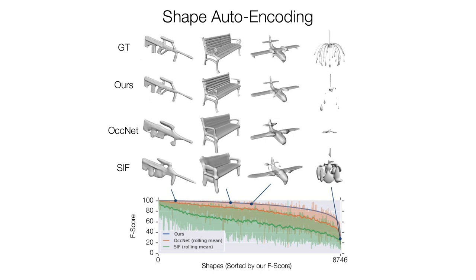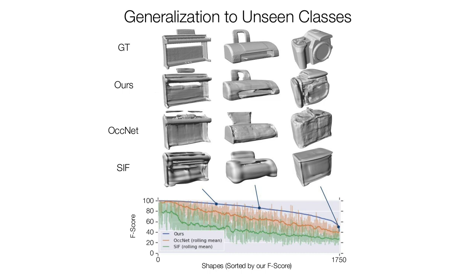One other thing to note is that the shapes appear similarly difficult for all methods. The LDIF representation also generalizes better than using a single latent vector. If you go to unseen classes like piano, printer, and camera, the delta between existing methods and LDIF increases.